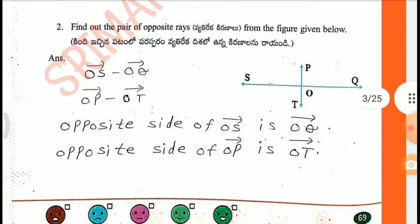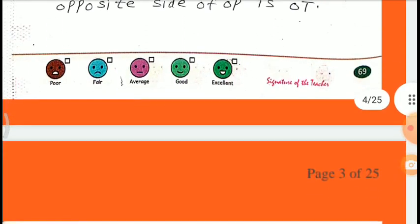Second one: Find out the pair of opposite rays from the figure given below. OS, OQ, OP, and OT are opposite sides. The opposite side of OS is OQ, and the opposite side of OP is OT.